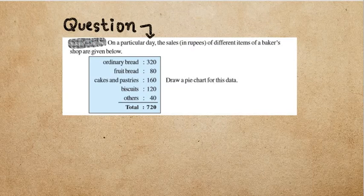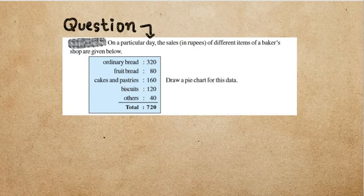A question is given in front of you. On a particular day, the sales in rupees of different items of a baker shop are given below. The observations are: ordinary bread 320 rupees, fruit bread 80 rupees, cakes and pastries 160 rupees, biscuits 120 rupees, and others 40 rupees. Total sale is 720 rupees.